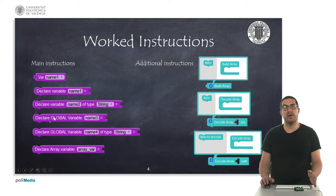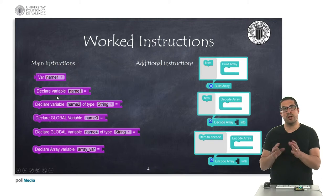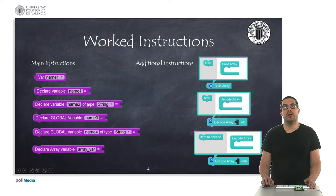Global variables could be used anywhere in the program, while local variables can only be used in the context where they have been defined. Depending on the instruction we can also specify the type of each of the variables we are going to discuss about types soon. Also, this instruction here allows us to declare an array variable, so we have a fixed number of elements all together with the same variable name. In order to build an array we can use this instruction here so we can drag and drop as many elements as we want.